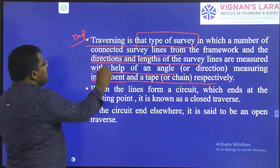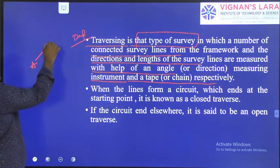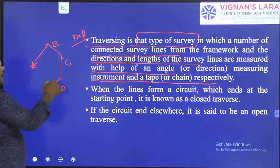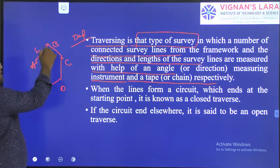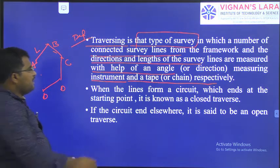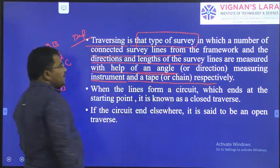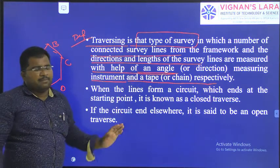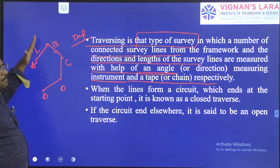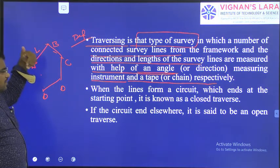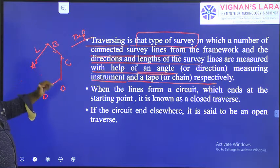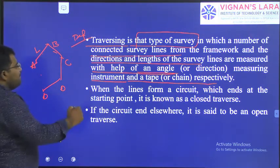In traversing, we have connected survey lines forming a framework — suppose points A, B, C, D, E connected together. Direction and length are measured with a chain, or by an angle-measuring instrument and a tape. Distances are measured by tape, and directions are measured with the angle-measuring instrument. Traversing is of two types: one is open traverse, and another is closed traverse.